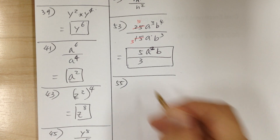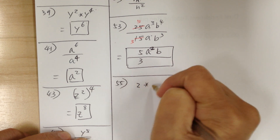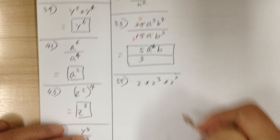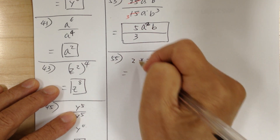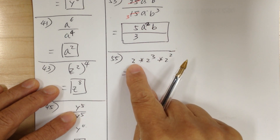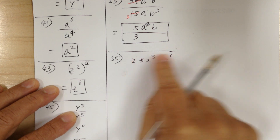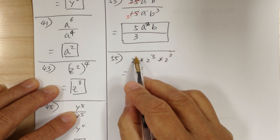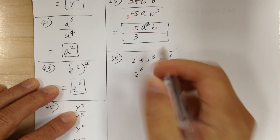Number 55, you got 2 times 2 to the 3 times 2 to the 2. Remember, when you don't see the exponent, it means it's 1. So when you add all the exponents, they become 2 to the 6 — because 1 plus 3 is 4, plus 2 gives you 6.